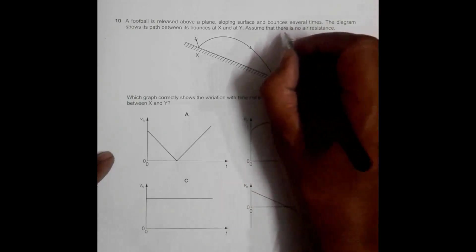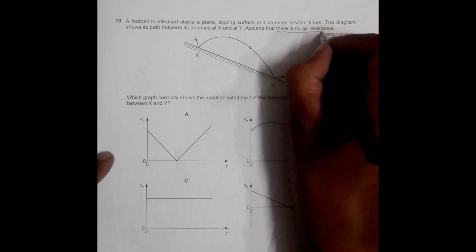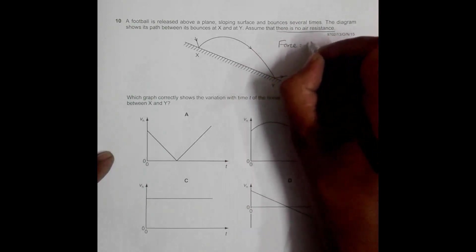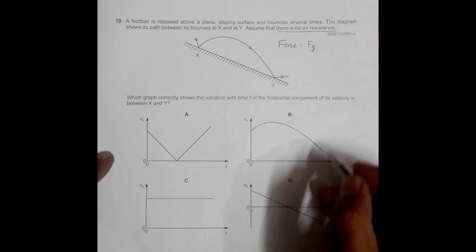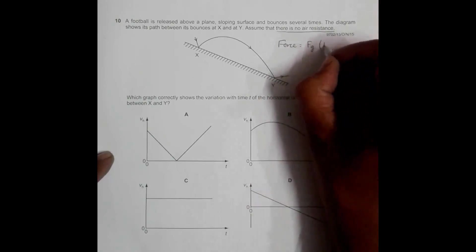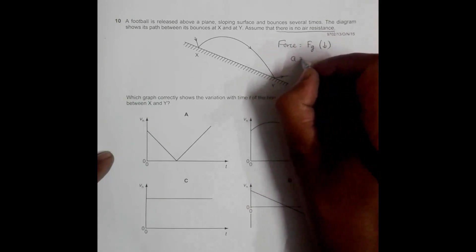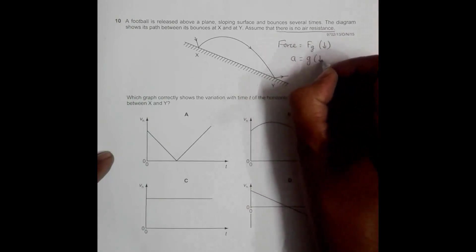One thing to remember is that when there is no air resistance, the only force available here is the force of gravity, which is vertically downward. And this means that the acceleration of the body is also vertically downward.